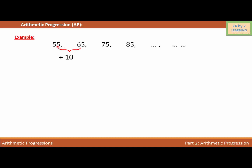Basically, I'm adding 10 to 55 to get 65. The difference between 65 and 75 is also 10, so I'm adding 10 to 65 to get 75. In the same way, between 75 and 85, I'm adding 10 to get 85. If I have to guess what number comes next, I can just add 10 to 85, so the next number should be 95. As you can see, the difference between any two numbers is 10, so I can call that difference the common difference.